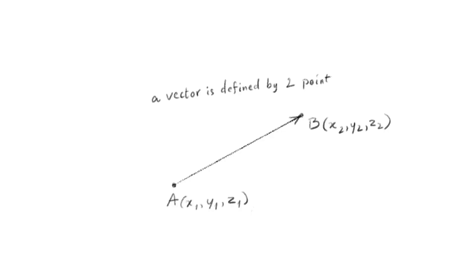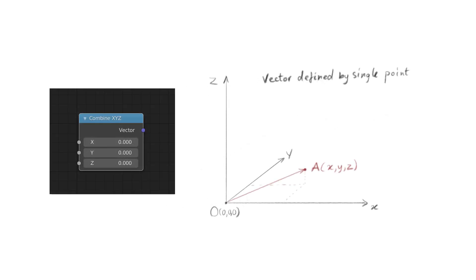Now, I'm not sure what they taught you in high school, but at my high school they taught me that a vector is defined by two points in 3D space, and each point is defined by a set of three numbers. However, in Blender and pretty much every other 3D application, a vector is defined by a set of three numbers. By definition this should be a point — so why is it called a vector? This is because the other point of the vector is actually the center of the world, so we can ignore the center of the world and call a single point a vector.